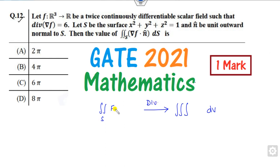What is the divergence theorem? f dot n is converted into the divergence of f. In this case, f is the gradient of f. The divergence here is given to you as 6.